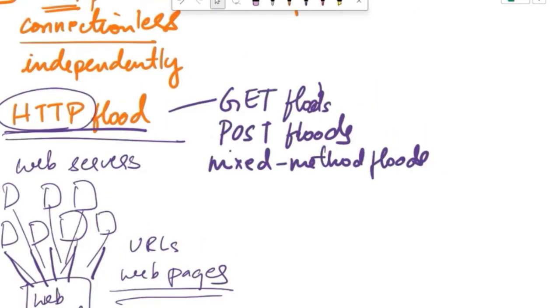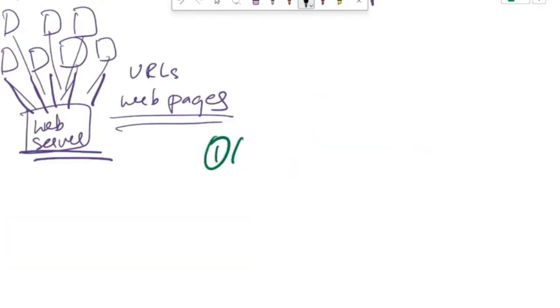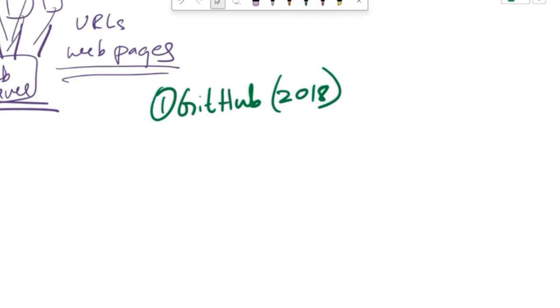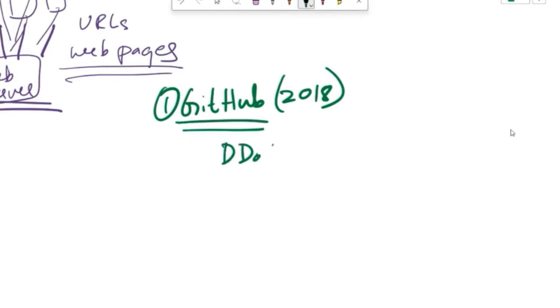Now let's look at some of the real world examples of DoS and DDoS attacks. First one is GitHub. It happened in 2018. GitHub is a popular code hosting platform and it experienced a massive DDoS attack that lasted for several days in 2018. The attack was attributed to a nation state actor widely believed to be China, targeting GitHub for hosting content related to the censorship evading software known as Great Fire.